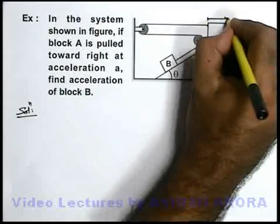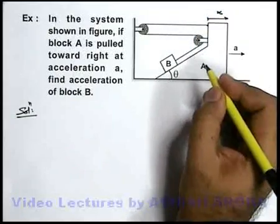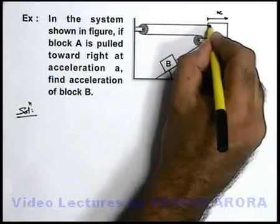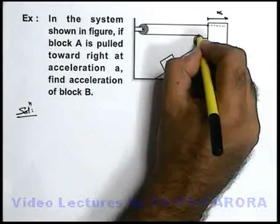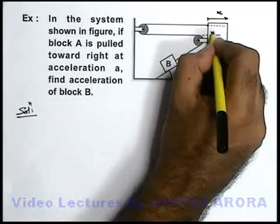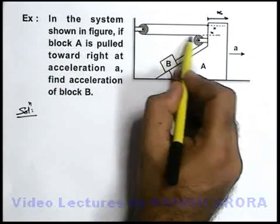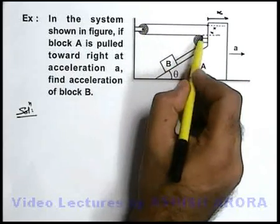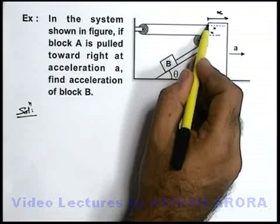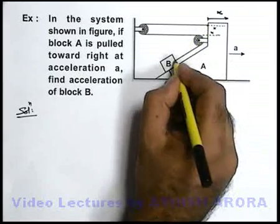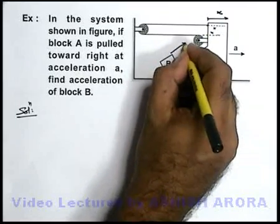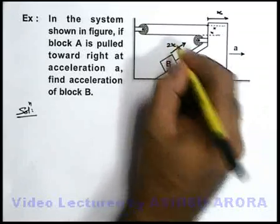Say if block A goes toward right by distance x, we can say this string will be pulled by distance x and this will also be pulled by distance x. So the length of string only up to this point of pulley will be extended by 2x.